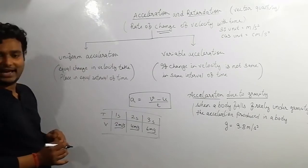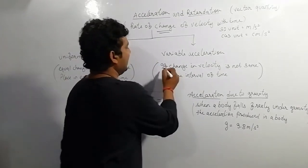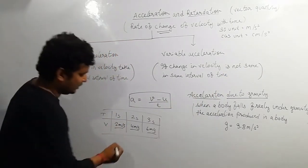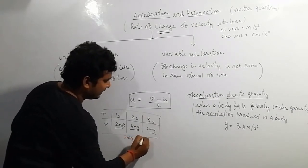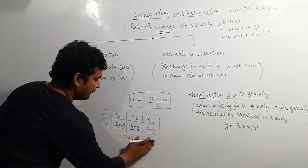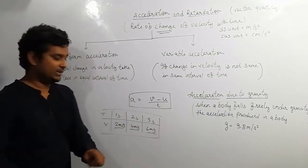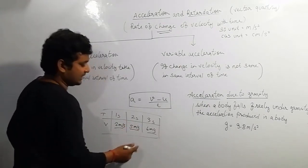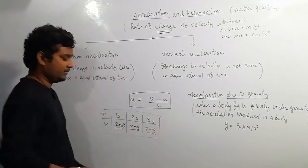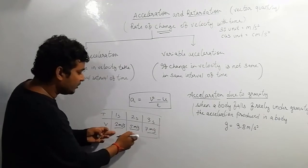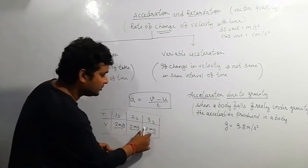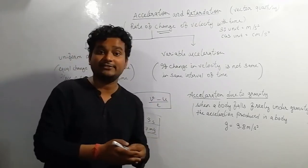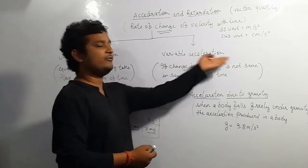Variable acceleration means the change in velocity is not the same in equal intervals of time. For example, if in the first second the body has 2 m/s, in the second second 5 m/s, and in the third second 7 m/s — the change is 3 m/s then 2 m/s, which is not constant. That is called variable acceleration — acceleration varies at every instant or every particular time interval.